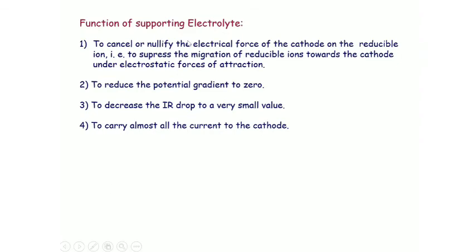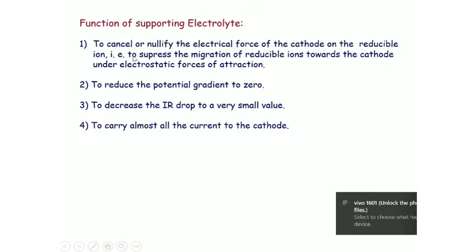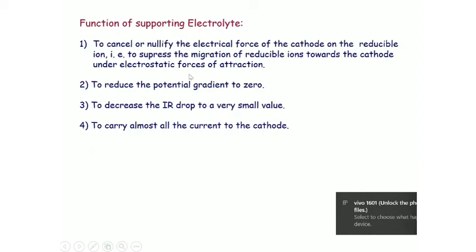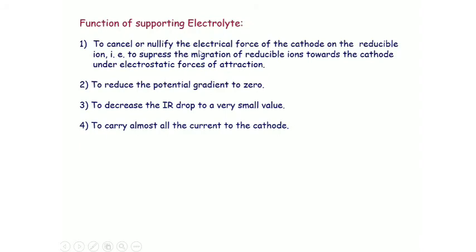The function of the supporting electrolyte is to cancel or nullify the electrical force of the cathode on the reducible ion — that is, to suppress migration of reducible ions due to electrostatic force of attraction. The second function is to reduce the potential gradient to zero, to decrease the IR drop to a very small value, and to carry almost all the current to the cathode.